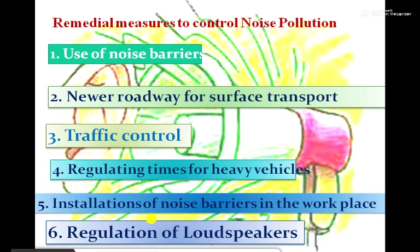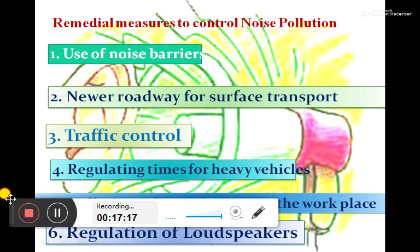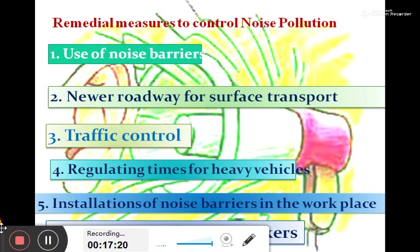Regulation of loudspeakers — the loudspeaker usage needs to be controlled. Installation of noise barriers in the workplace is also required. We can actually adjust and measure the noise. This is an important topic and that is why we need to control the noise.